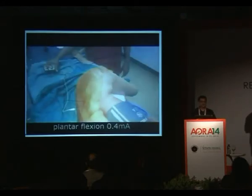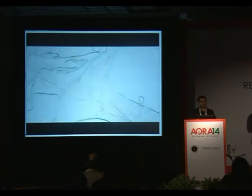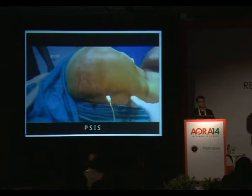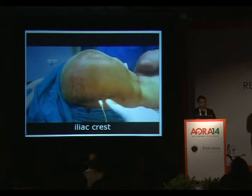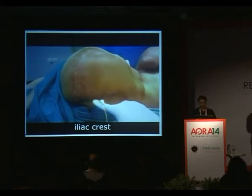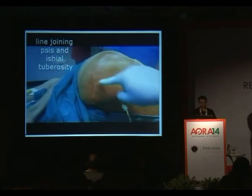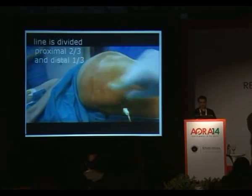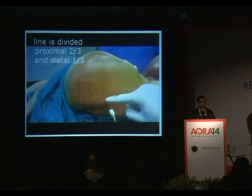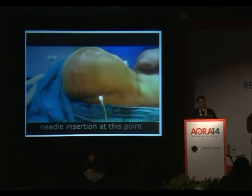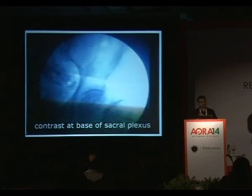Inject around 20 to 25 mL of local anesthetic. Some Western studies have mentioned large volumes for lumbar plexus blocks, but in Indian populations who are thin and not obese, you can use around 20 mL. For the sacral plexus block, you join the line from the ischial tuberosity to the posterior superior iliac spine, divide it into three parts, and insert the needle at the upper third and lower two-thirds junction.